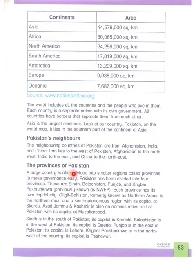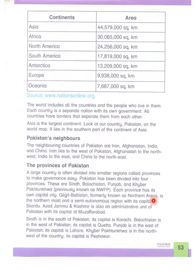The provinces of Pakistan: a large country is often divided into smaller regions called provinces to make governance easy. Pakistan has been divided into four provinces: Sindh, Balochistan, Punjab, and Khyber Pakhtunkhwa, previously known as NWFP. Each province has its own capital city. Gilgit-Baltistan, formerly known as Northern Areas, is the northernmost semi-autonomous region with its capital at Skardu.